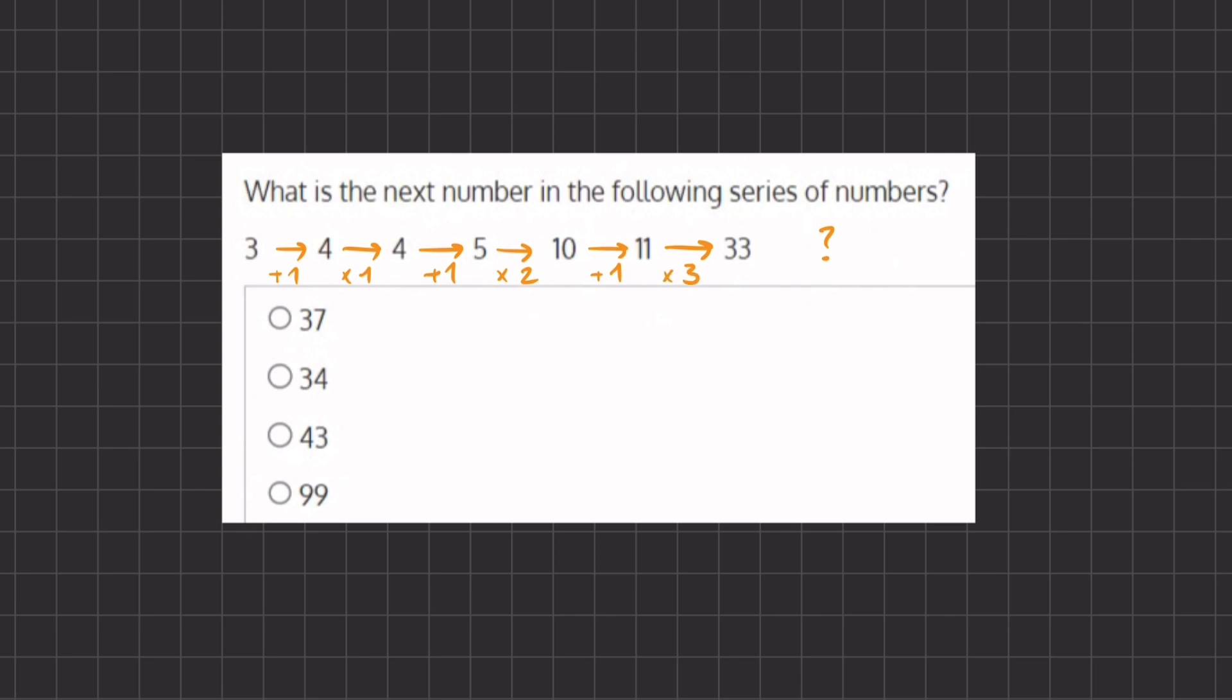So as you can tell, our transitions are changing from addition to multiplication. And our multiplication keeps growing by 1. So here we multiplied by 1, here we multiplied by 2, and here we multiplied by 3.